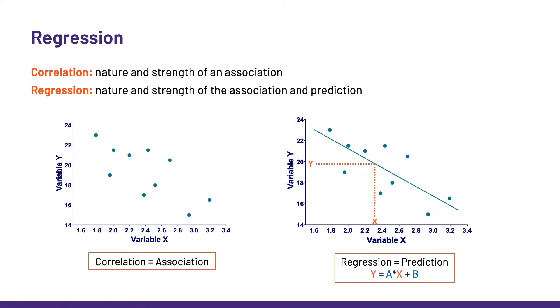First of all, let me remind you about the difference between correlation and regression. A correlation is telling us about the nature and the strength of an association, whereas the regression is telling us about nature and strength too, but also about the prediction. It's telling us the extent to which x can predict y. A regression would give us the equation of the line of best fit.